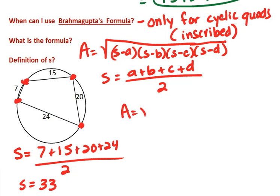Let's try our area then. 33 minus 7 is 26, 33 minus 15 is 18, 33 minus 20 is 13, 33 minus 24 is 9.